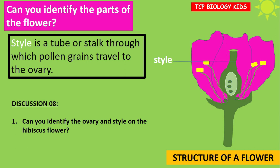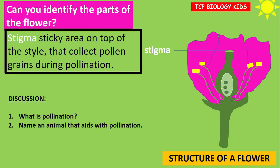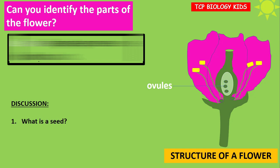The style is a tube or stalk through which pollen grains travel to the ovary. Can you identify the ovary and style on the hibiscus plant? The stigma is a sticky area on top of the style that collects pollen grains during pollination. What is pollination? Name an animal that aids with pollination. Ovules are the female part of a plant that contain the ovum, or sex cell, in plants. What is a seed?